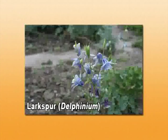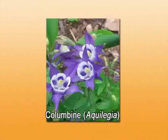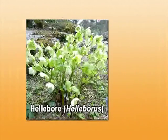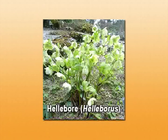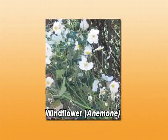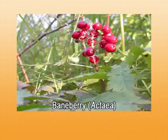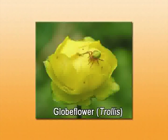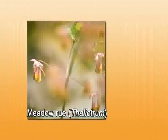Some of the commonly grown ornamentals in this family include larkspur (scientifically Delphinium), columbine (scientifically Aquilegia), the common buttercup (scientifically Ranunculus), hellebore (Helleborus), windflower (Anemone), baneberry (Actaea), Clematis — a woody climber commonly known as Virgin's Bower — globe flower (Trollius), meadow rue (Thalictrum), and Aconitum, also used medicinally, commonly known as Monkshood.